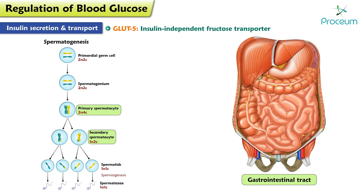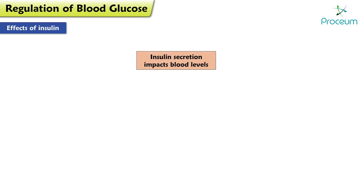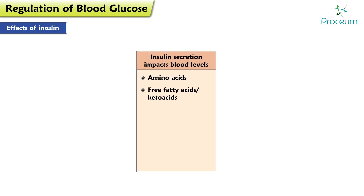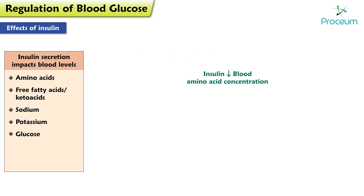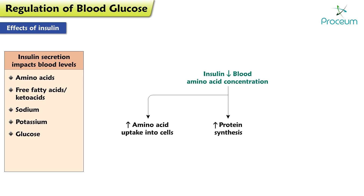Now let's talk about the effects of insulin. Insulin secretion impacts the blood levels of amino acids, free fatty acids or ketoacids, sodium, potassium, and glucose. Insulin decreases blood amino acid concentration by increasing amino acid uptake into the cells, increasing protein synthesis, and decreasing protein degradation.